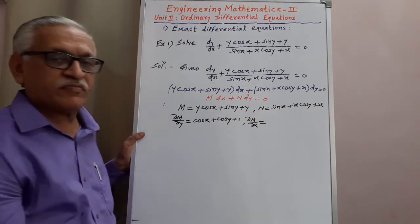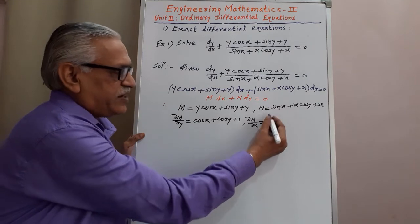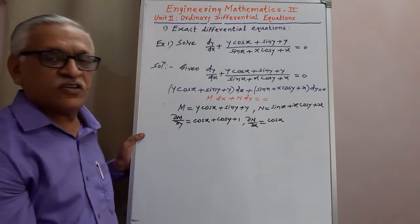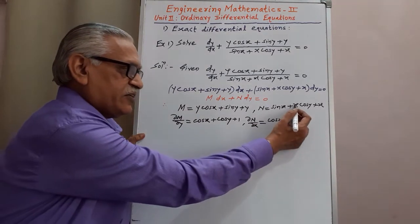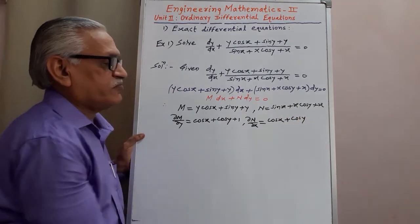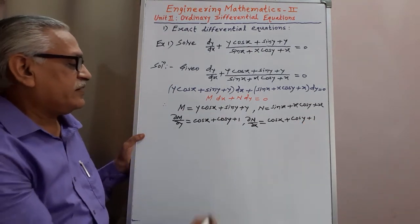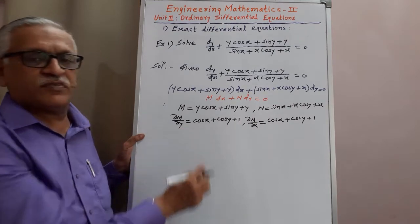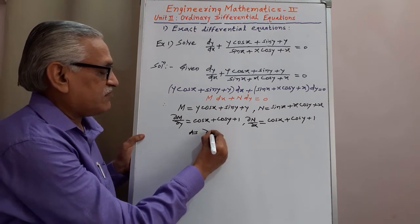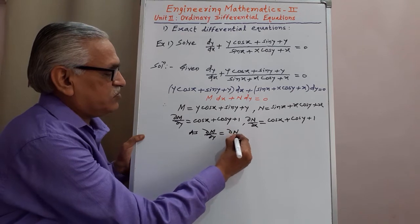Then we find ∂N/∂x, differentiating N with respect to x, keeping y constant. Derivative of sin x is cos x; in x cos y, treating cos y as constant, derivative of x is 1, so it is cos y; and derivative of x with respect to x is 1. Therefore ∂M/∂y equals ∂N/∂x.